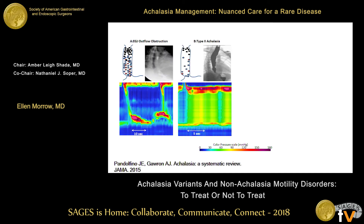EGJ outflow obstruction: all of the disorders shown on this slide involve EGJ outflow obstruction. The first disorder is just EGJ outflow obstruction — you see a non-relaxing LES but with preserved peristalsis. On the bottom you're going to see the high-resolution manometry images, and above that you can see a representative esophagram and what the innervation of the esophagus looks like in that cartoon.